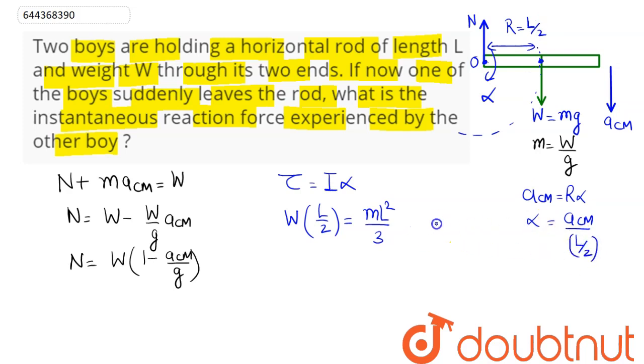So substituting the value here, we can say α as 2*ACM/L.